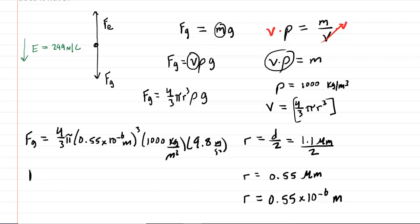So when we work this all out, we can see that Fg is equal to 6.83 times 10 to the minus 15 newtons. And that would be the correct answer to part A of the question.